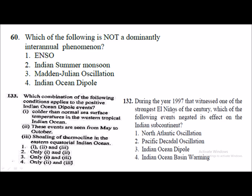From CSIR NET December 2017: 'During 1997, which witnessed one of the strongest El Niño events of the century, which of the following events negated its effect on the Indian subcontinent?' The answer is the Indian Ocean Dipole. Both El Niño and the Indian Ocean Dipole play significant roles in the climate of the Indian subcontinent, and both are closely related to the Indian summer monsoon, which brings vital rainfall to India every year.